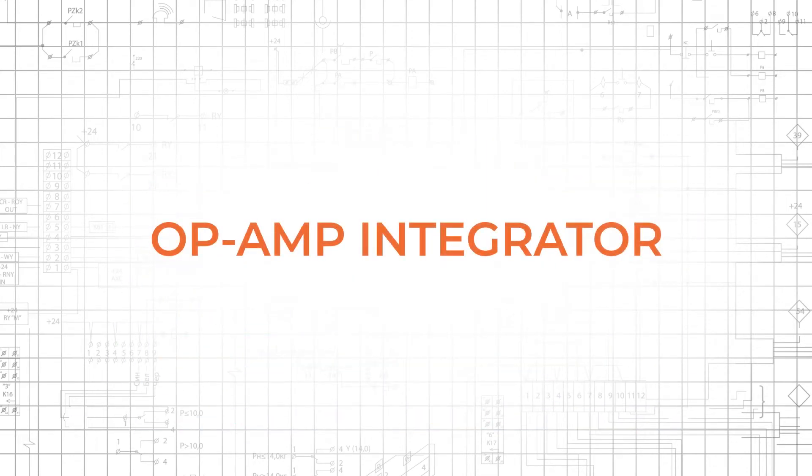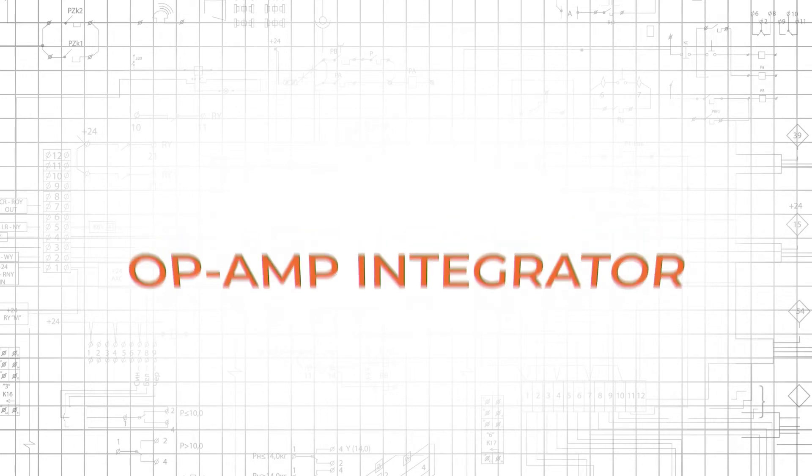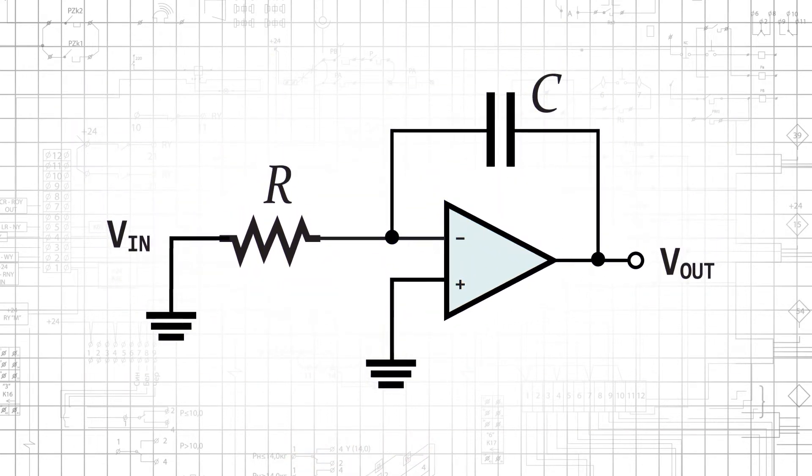The op-amp integrator performs mathematical integration and requires nothing more than an op-amp and a few passive components. Integration can be accomplished by using a typical inverting op-amp configuration, but with a capacitor in the feedback path instead of a resistor.